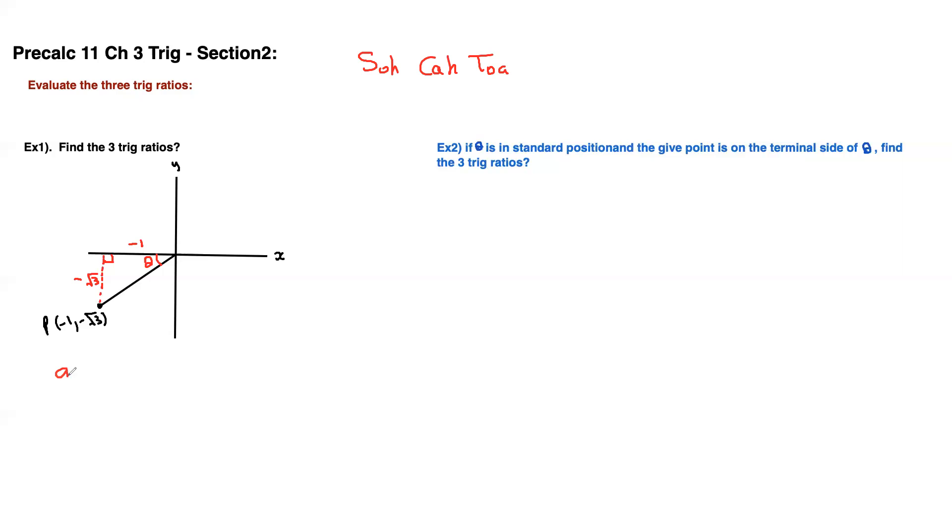I'm just going to write a squared plus b squared equals c squared. Therefore, it's negative 1 squared plus negative root 3 squared. You don't even need the negative because when you square them, they become positive anyways. That's 1 plus 3 equals c squared, so 4 equals c squared. C equals 2.